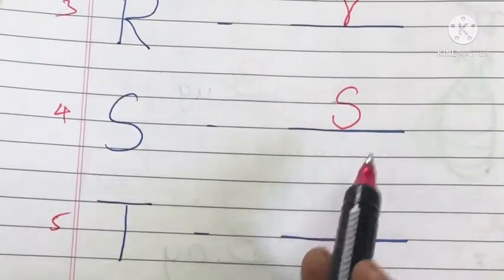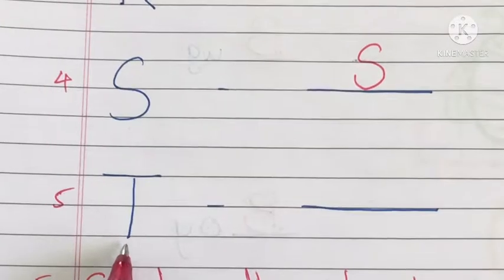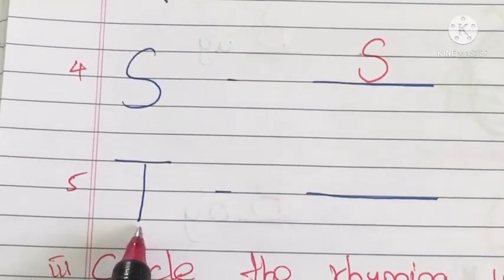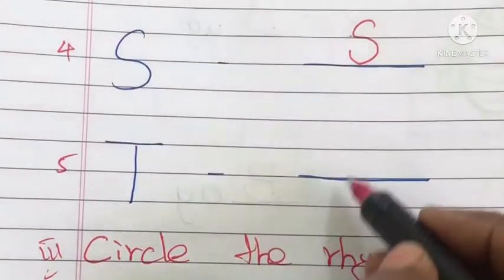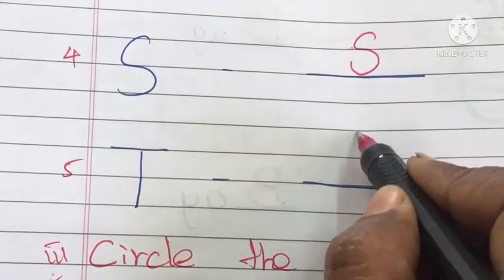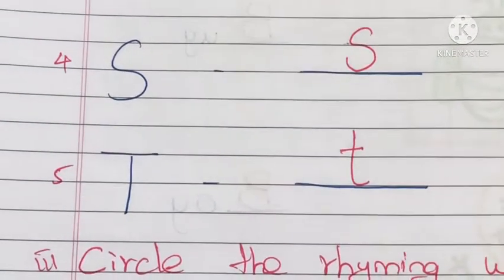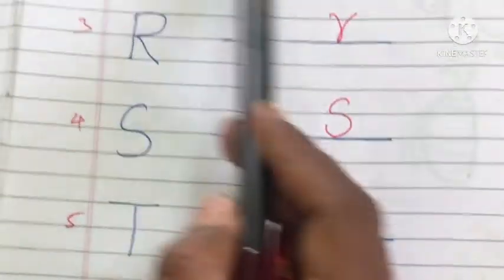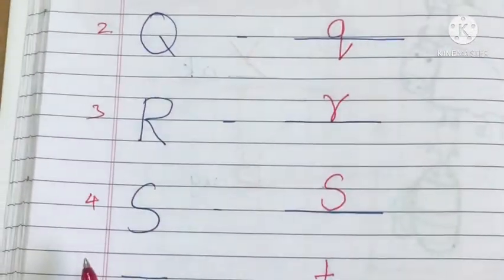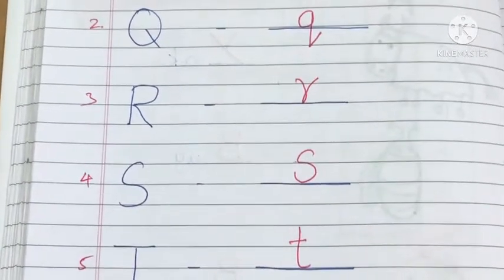It is the small letter S. See the next letter — it is the capital letter T. We have to write the small letter T. Write it — small letter T. By practicing this we can easily know the small letters for the capital letters.